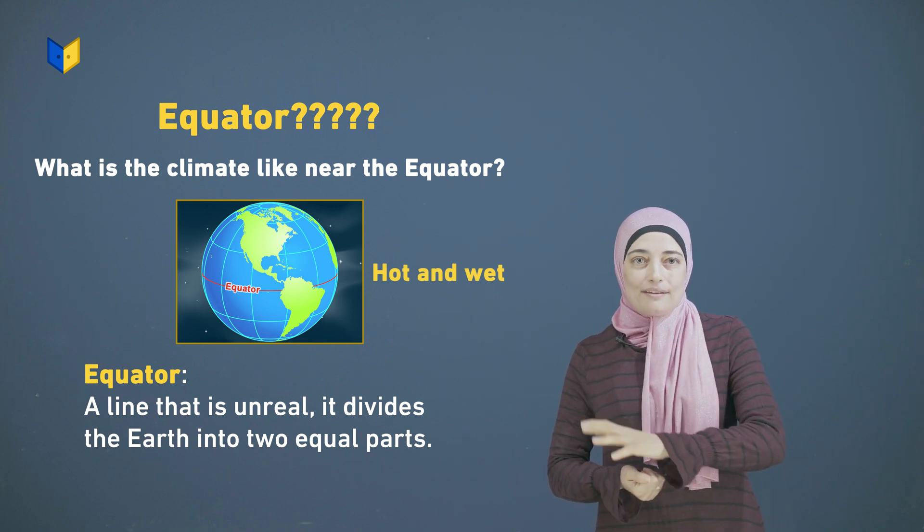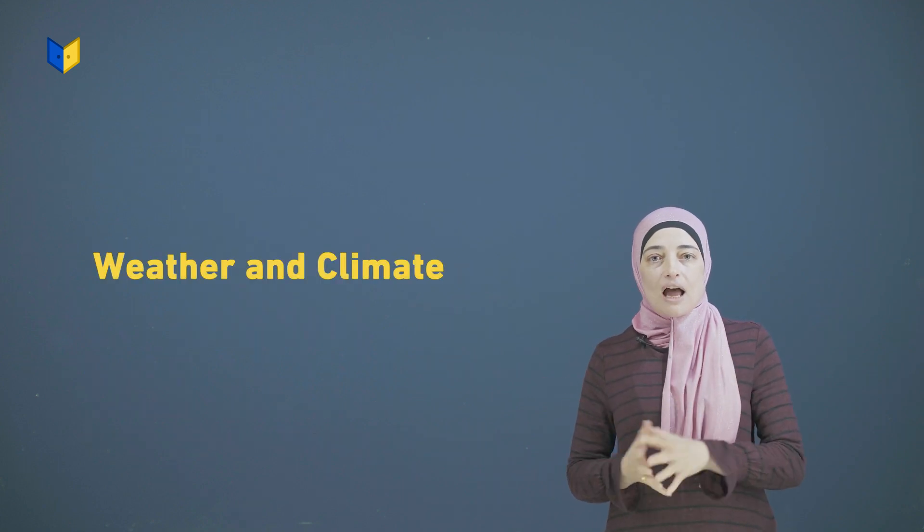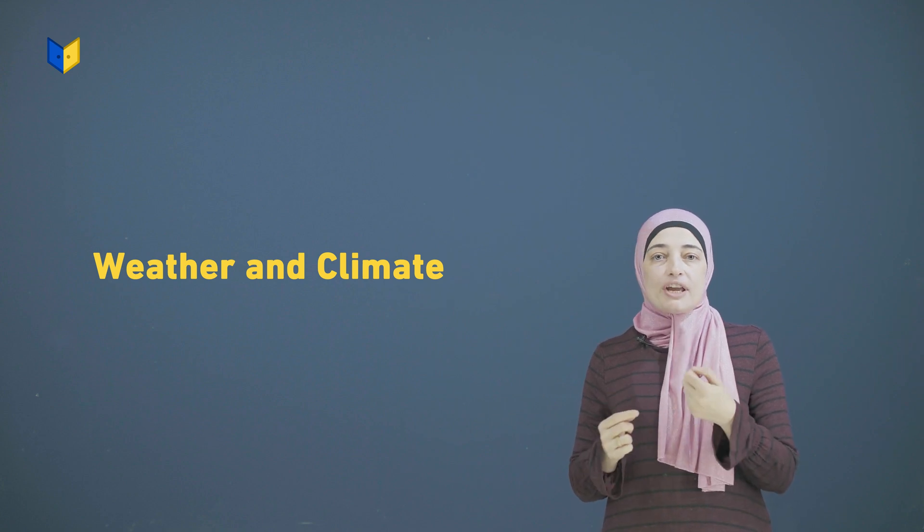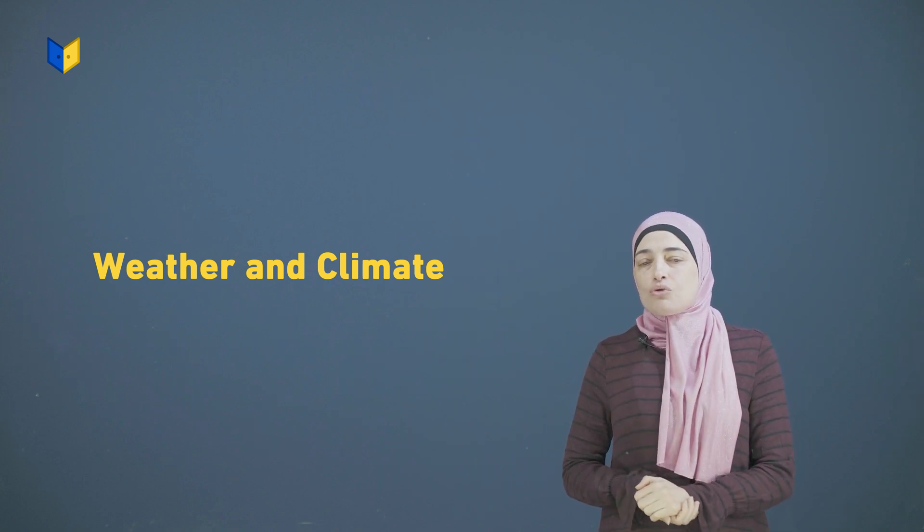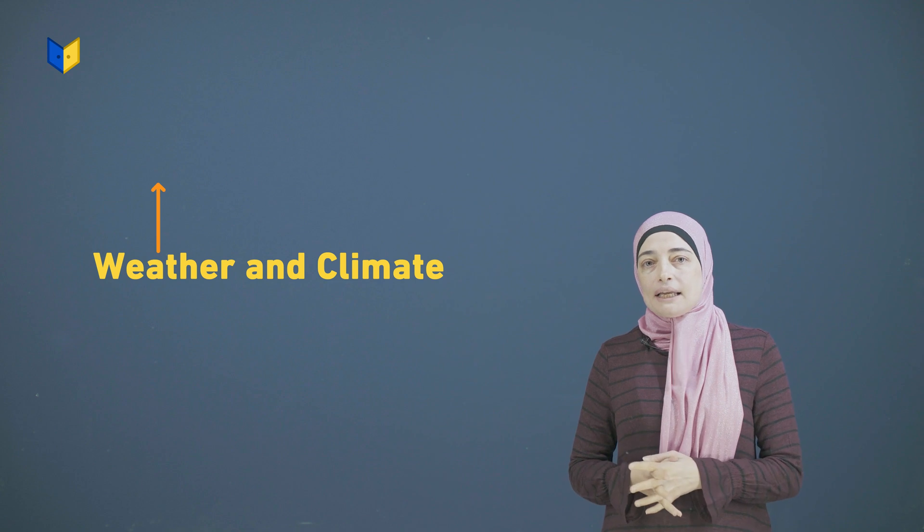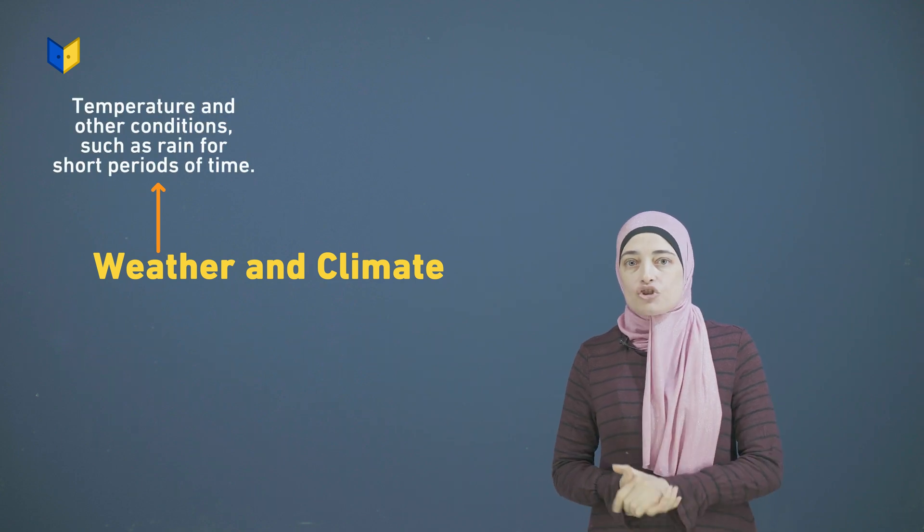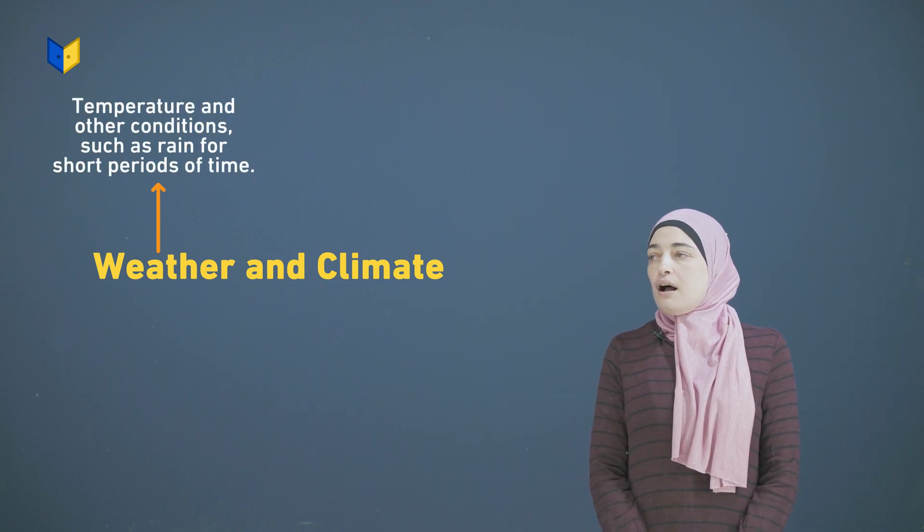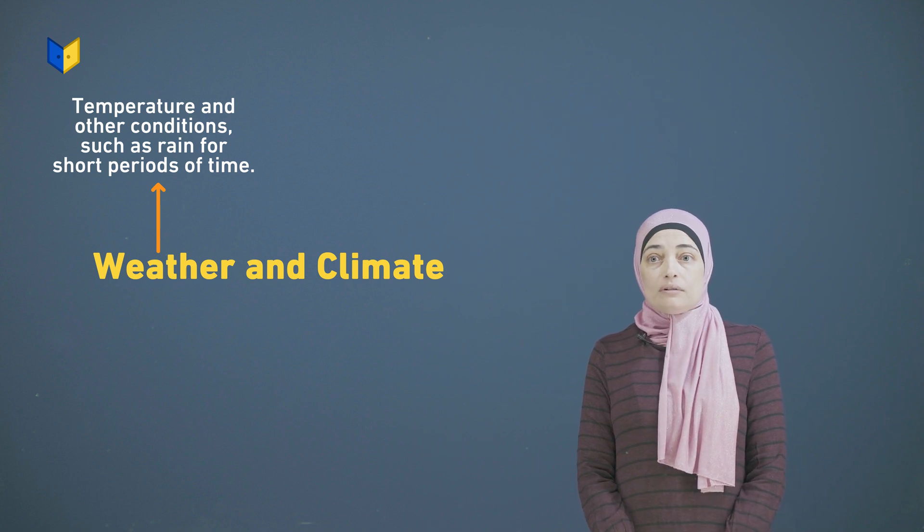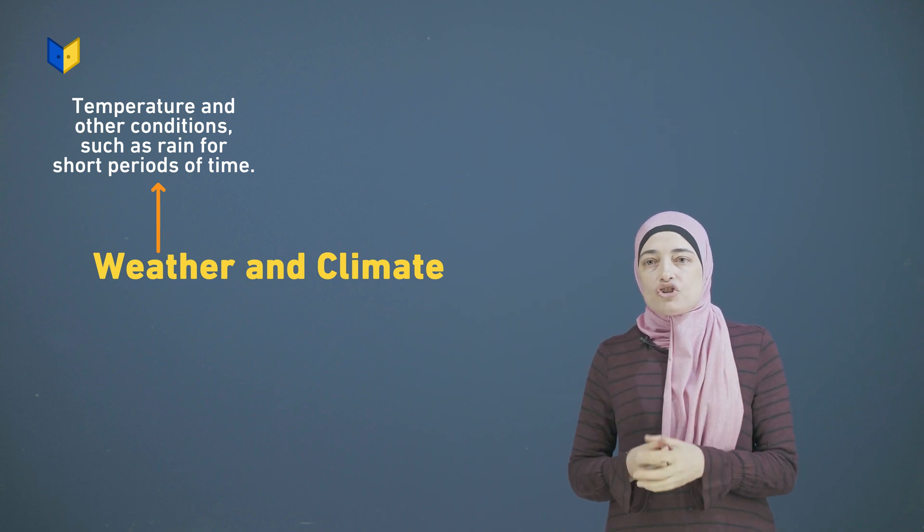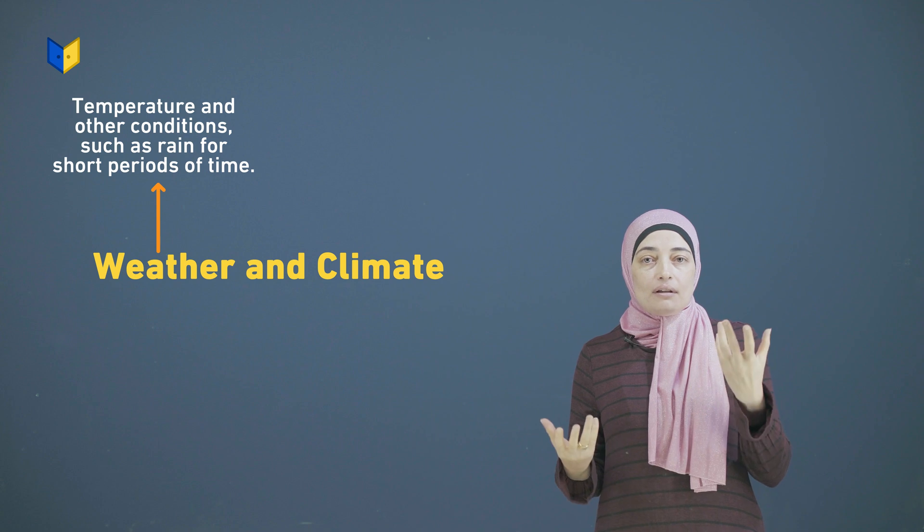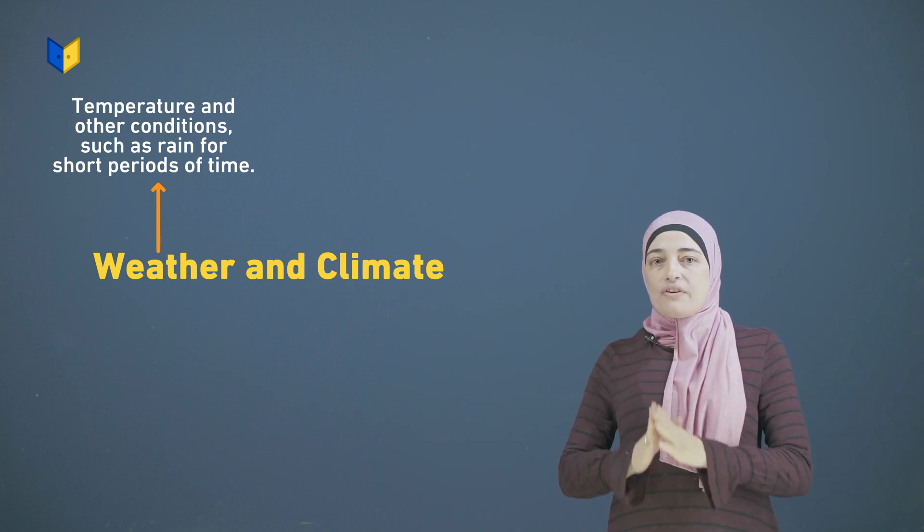Today we are going to talk about weather and the climate. Can you differentiate between them? In English, weather means temperature and other conditions such as rain, for example.